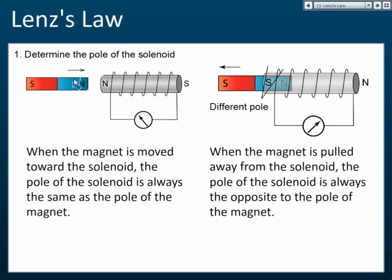We have a north pole here. When this pole is pushed inside this solenoid, initially there's no current, but once the north pole is pushed inside, current will start flowing. When current starts flowing, it will generate another magnetic field — one field from the magnet and another field from the solenoid. This new field will oppose the motion of the magnet.